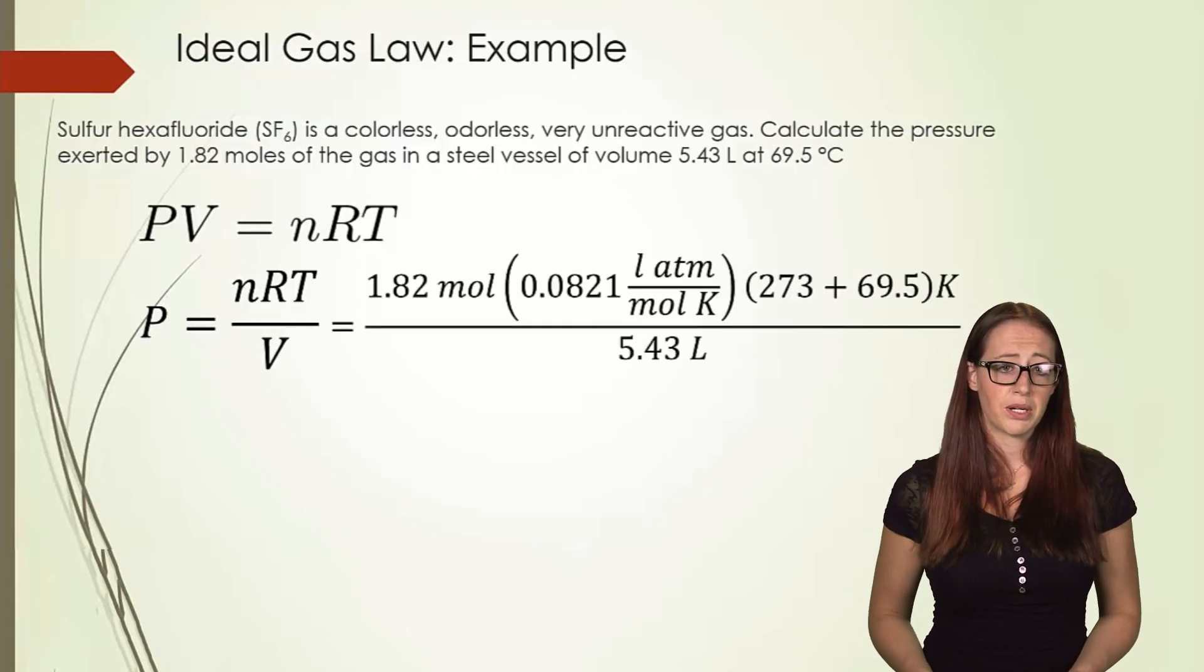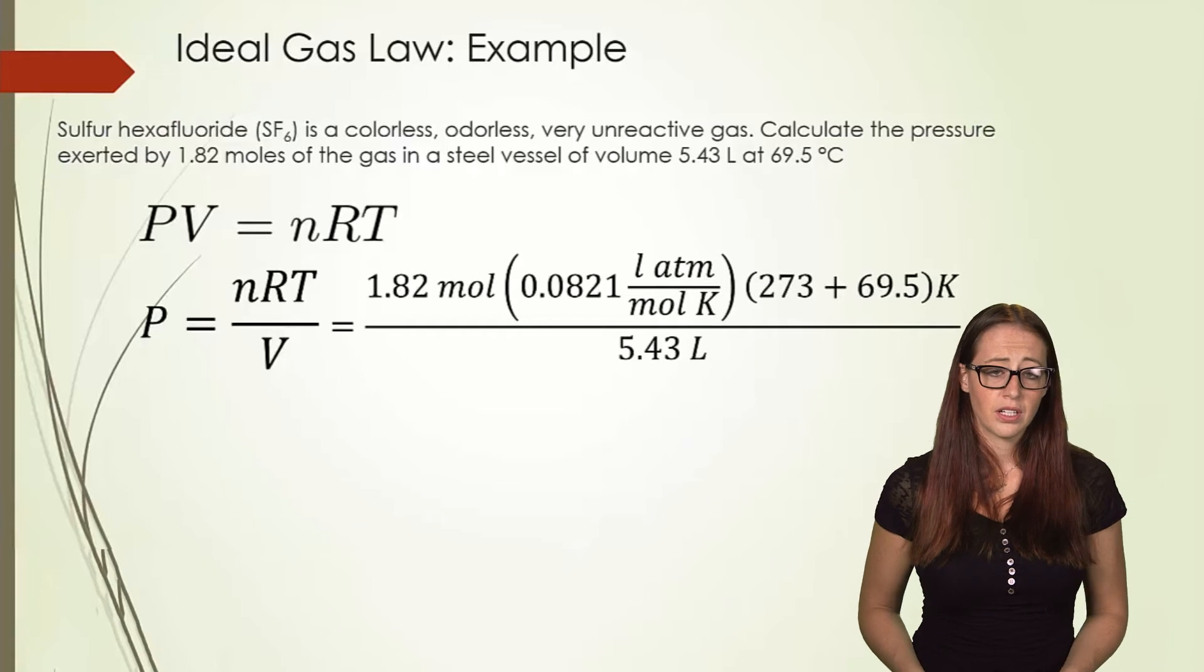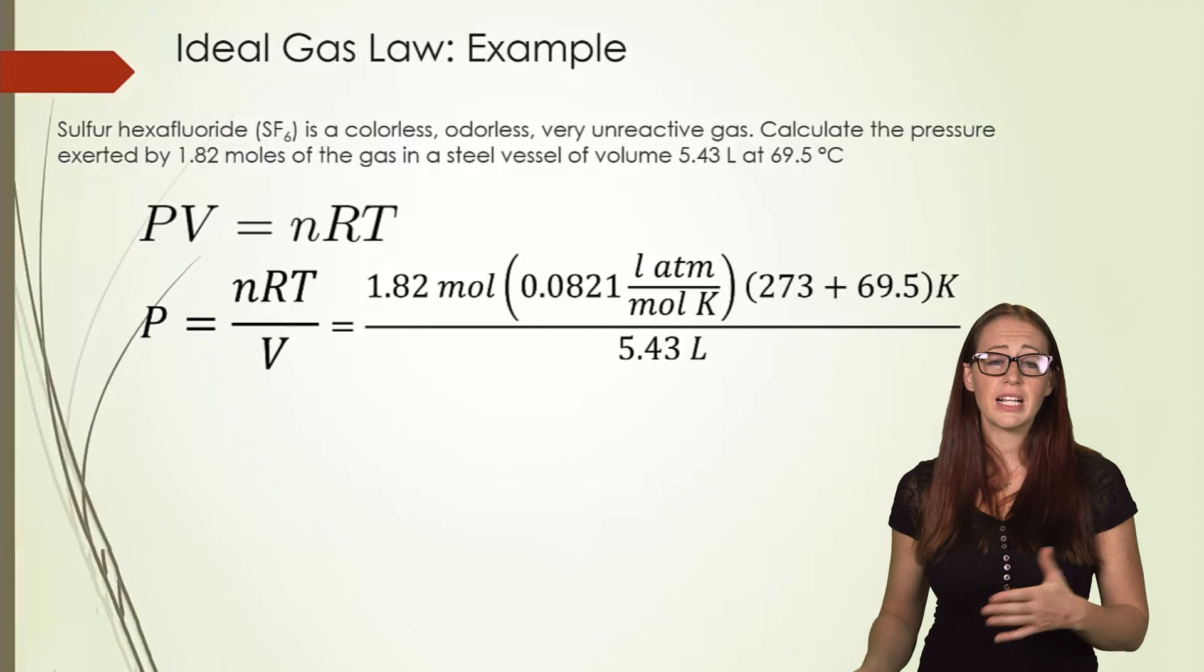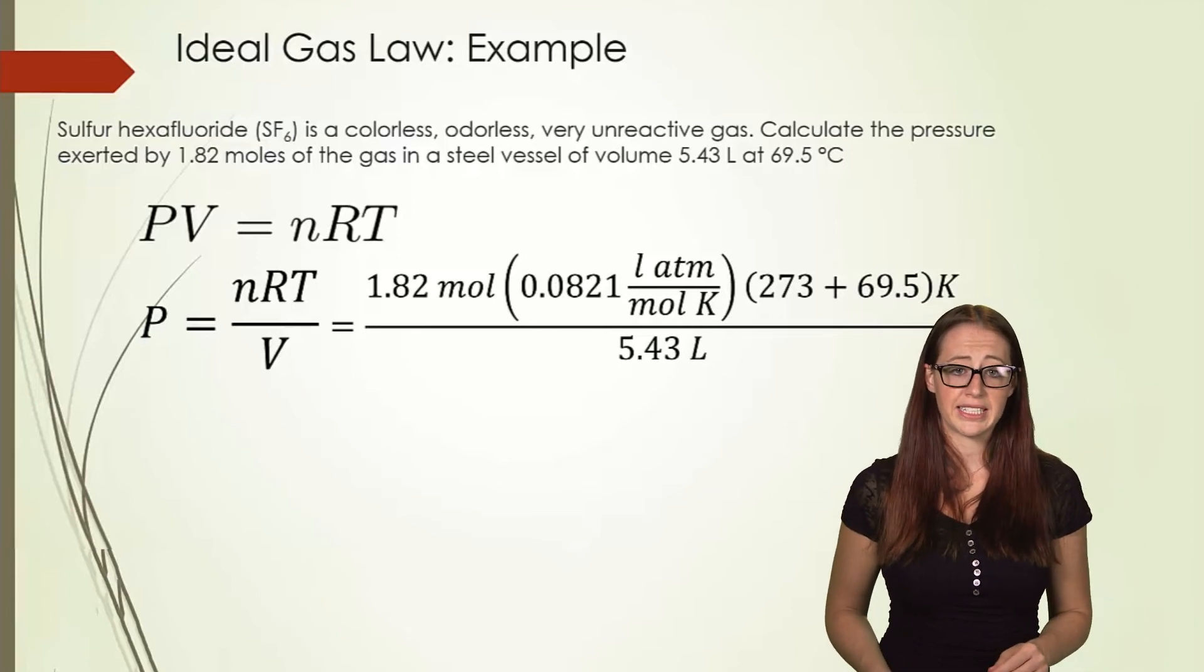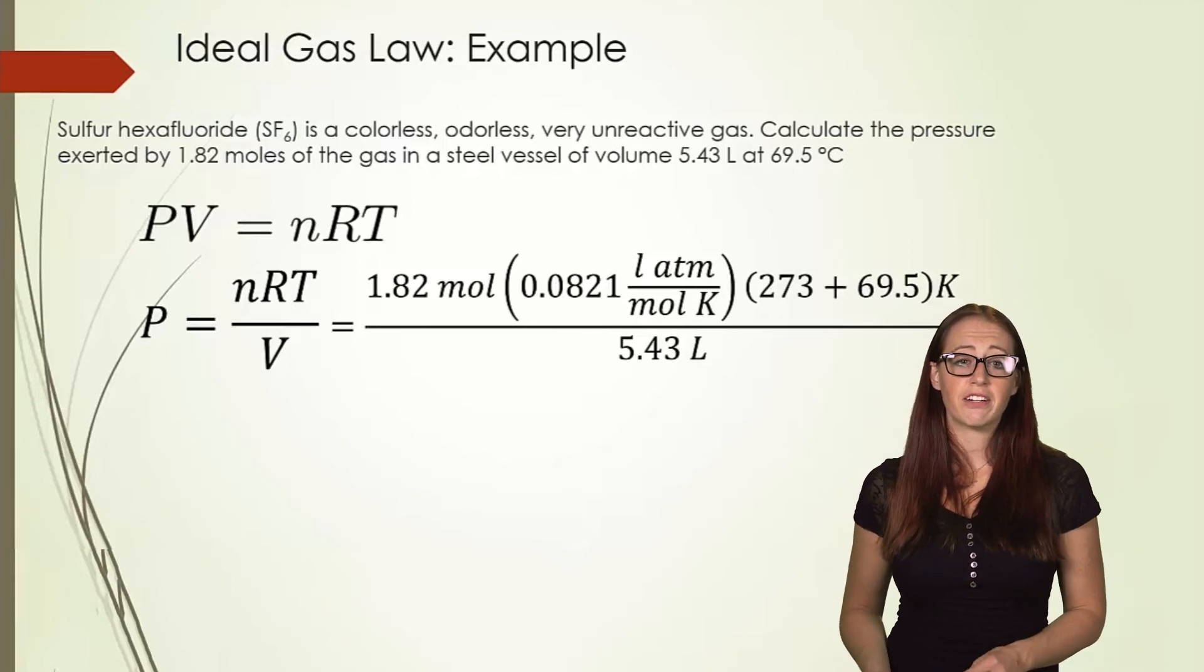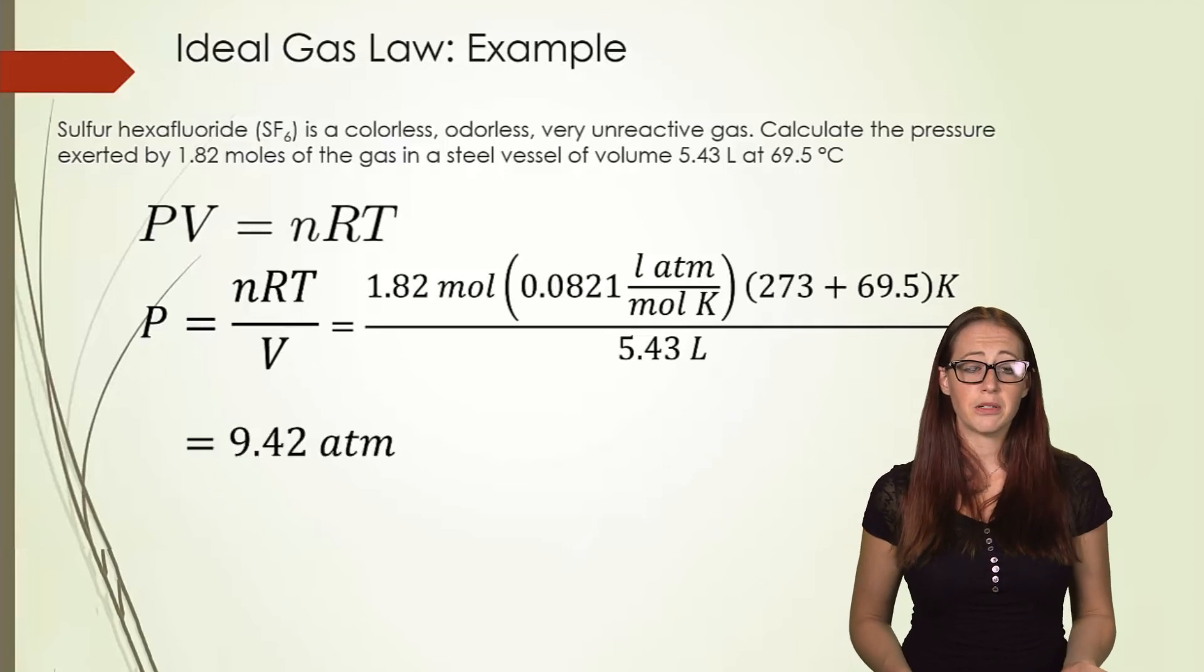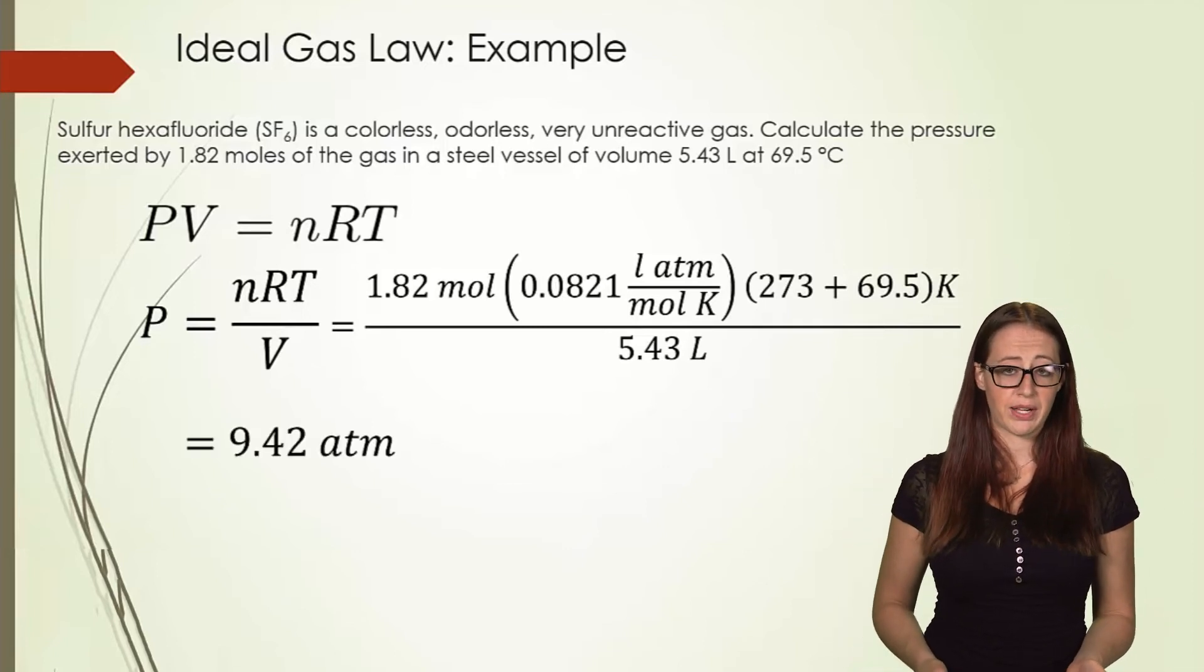We fill in our 1.82 moles. We fill in our ideal gas law constant. We fill in our temperature, while adding it to 273 to convert it into Kelvin. And we divide by our 5.43 liters. This gives us a final pressure of 9.42 atmospheres.